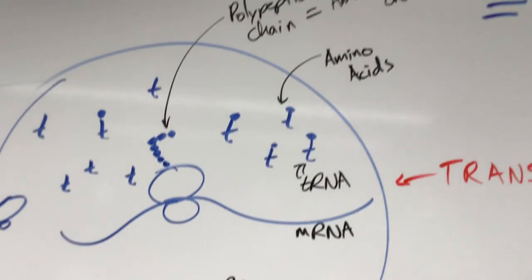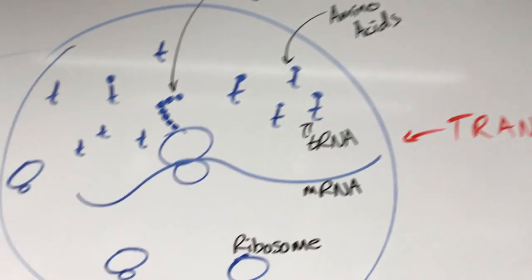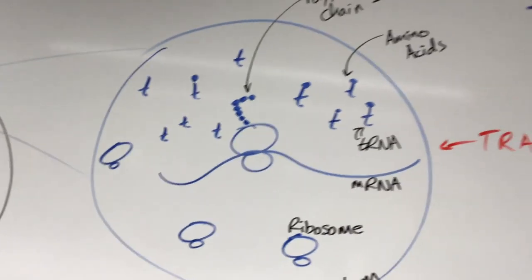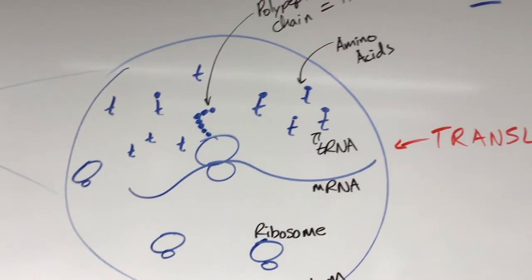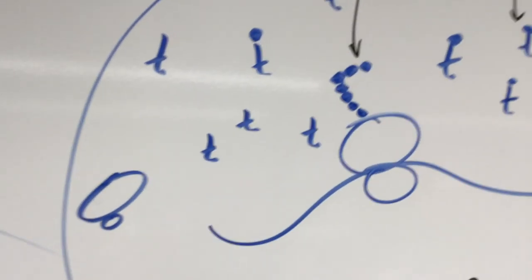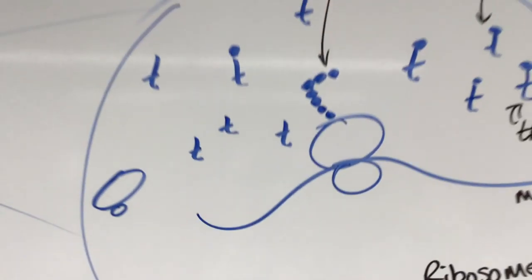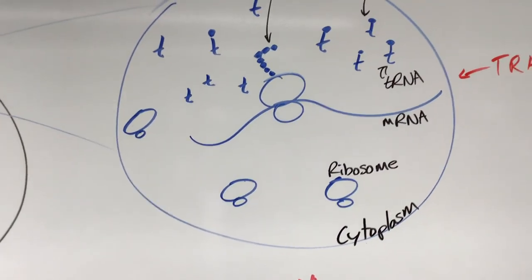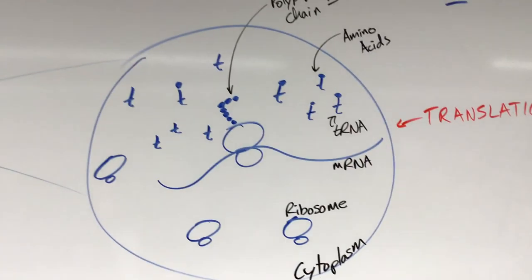Those transfer RNAs are carrying amino acids. Those amino acids get rounded up by the ribosome. The ribosome rounds up the tRNAs, carrying the amino acids, and it detaches those amino acids and puts them together. And when they start getting put together in the cytoplasm, that's the translation side of this whole central dogma. What we're looking at is the translation process.